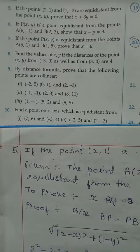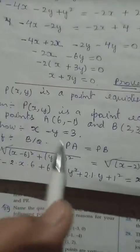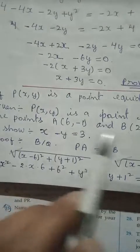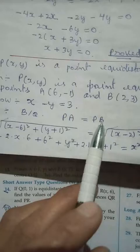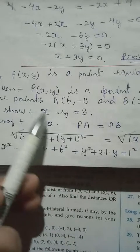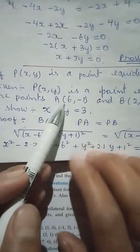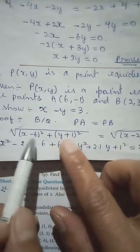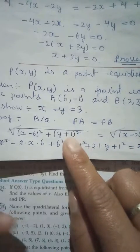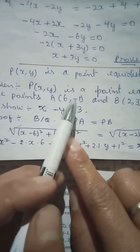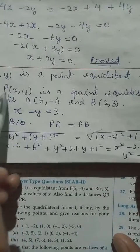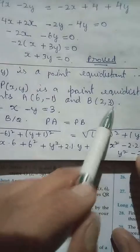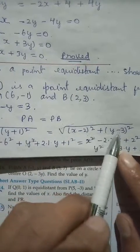Reading the question again: P is equidistant from A and B, so PA equals PB. For PA, we have P at (x, y) and A at (6, -1), giving us x minus 6 whole square plus y minus negative 1, which becomes y plus 1 whole square. For PB, we have P at (x, y) and B at (2, 3), giving x minus 2 whole square plus y minus 3 whole square. Both sides are equal.